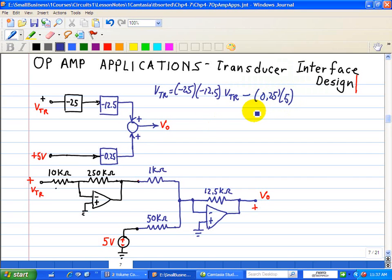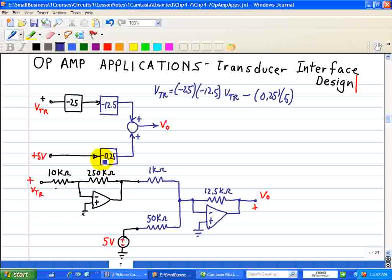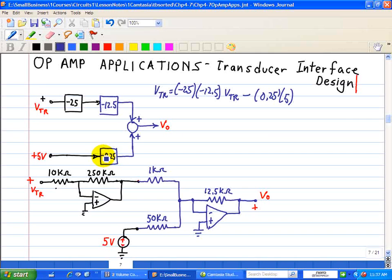So here is a block diagram implementation of this equation. Again, here you see the minus 25, the minus 12.5 feeding through this summer, and a 5 volt feeding through this 0.25 with a negative as the other input to this summer. And we have our output voltage of this interface.